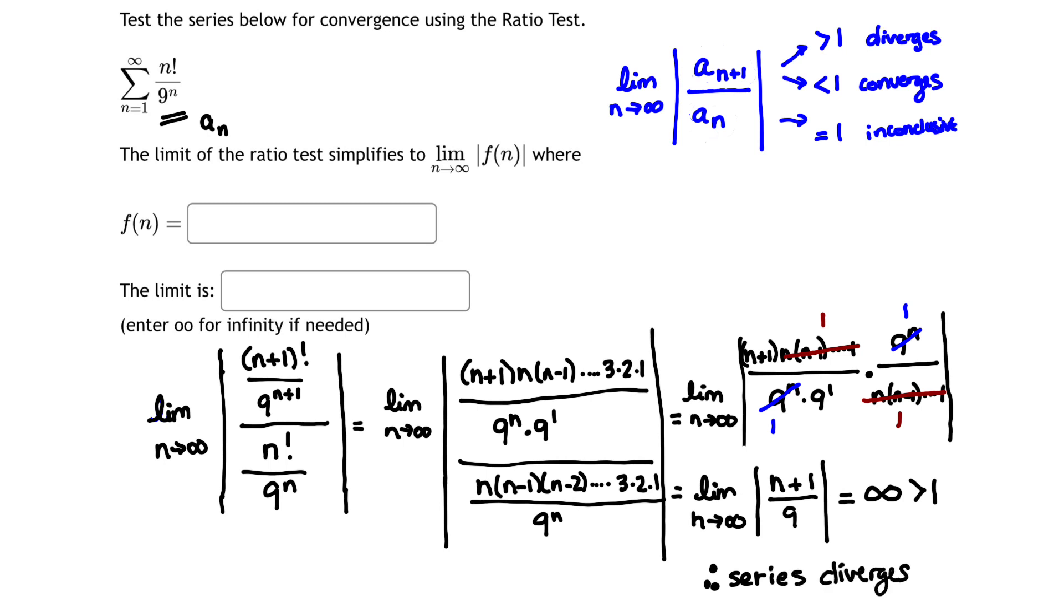Let's put these pieces into our boxes for MyOpenMath. We have for the first piece that f of n is the simplified form of the function inside the absolute value. That's the piece down here right before we take the limit. So f of n is the simplified form n plus 1 divided by 9.